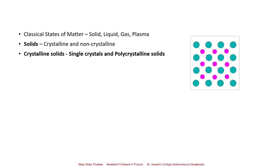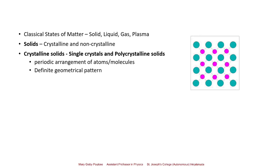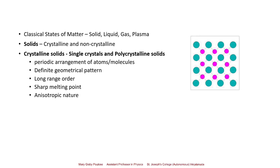Crystalline solids can be single crystals and polycrystalline solids. They have a periodic arrangement of atoms or molecules, a definite geometrical pattern, and a long range order — meaning the periodic distribution of atoms repeats over a large distance. They have a sharp melting point since all bond lengths between atoms and molecules are equal, so at a particular temperature all bonds dissociate. They also show anisotropic behavior, meaning they have different properties along different orientations of the crystal.